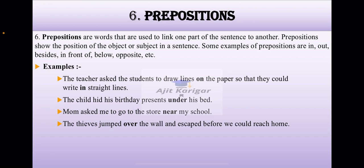The examples are: The teacher asked the students to draw lines on the paper so that they could write in straight lines. The teacher has suggested to draw the lines where it is on. Remember on the paper. And she has also suggested that in straight lines. In and on are both the prepositions in the sentence.